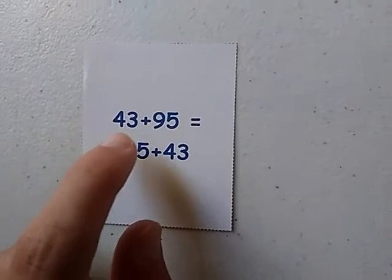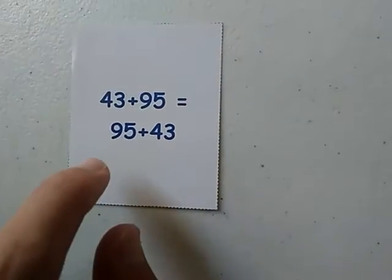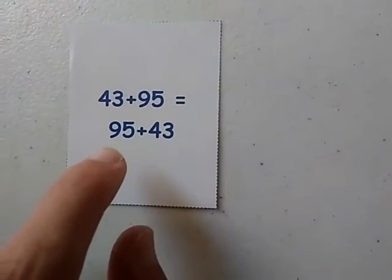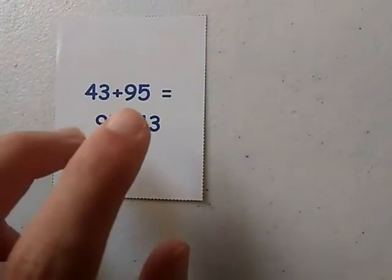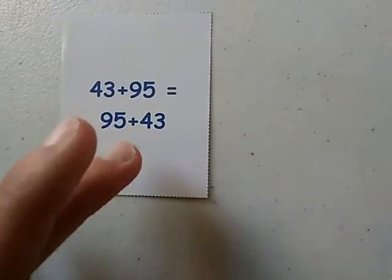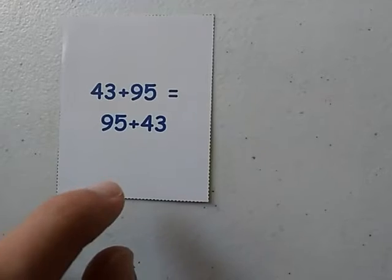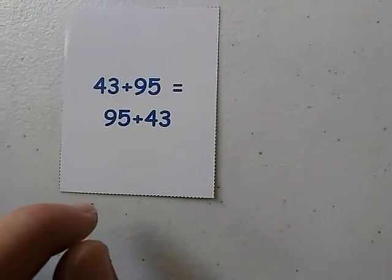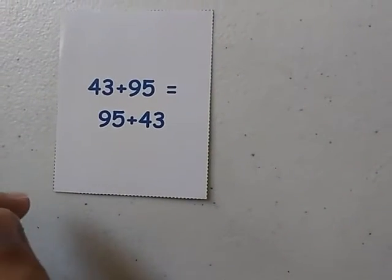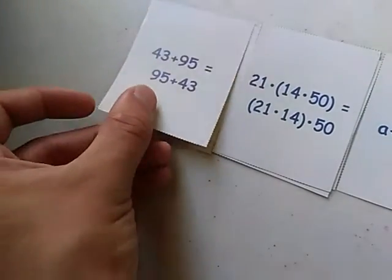43 plus 95 equals 95 plus 43. Note that if we switch the addends, the sum does not change — it stays the same. So this is the Commutative Property of Addition.